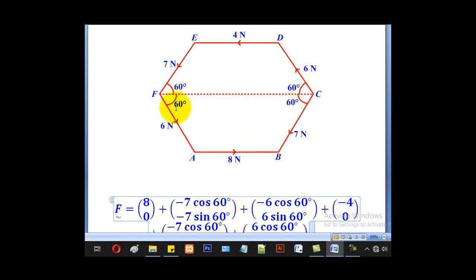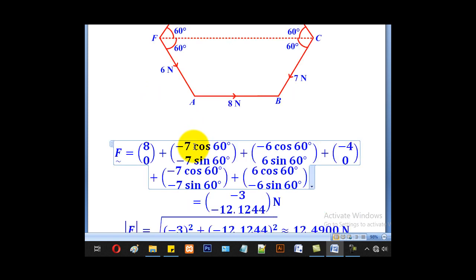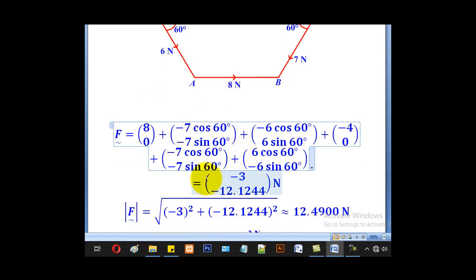For 6, it is going to the right. So it will be positive 6 cos 60 and negative 6 sin 60. When you add everything on the horizontal component, you shall get negative 3. Everything on the vertical component, you shall get negative 12.1244.